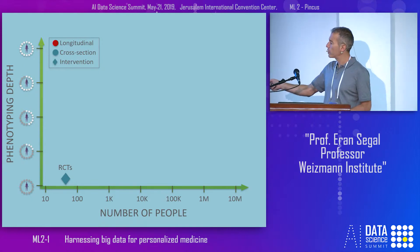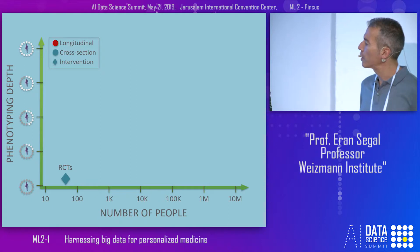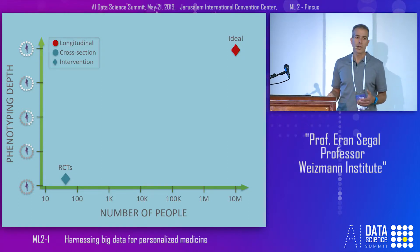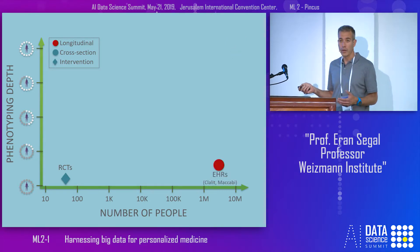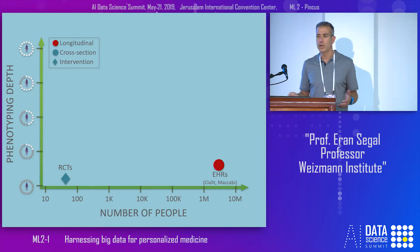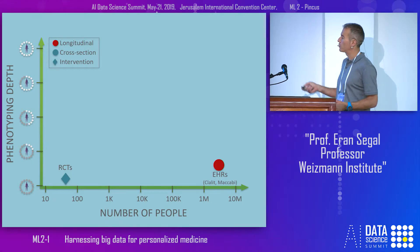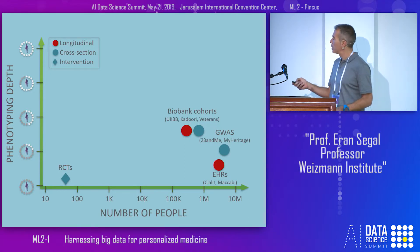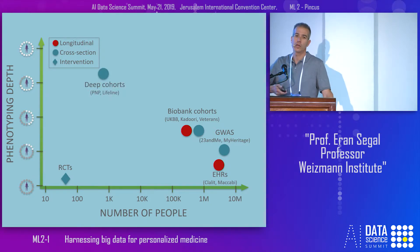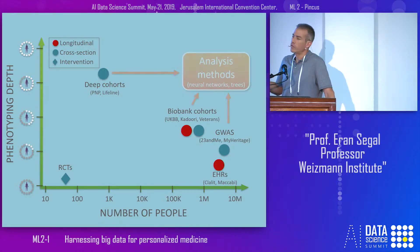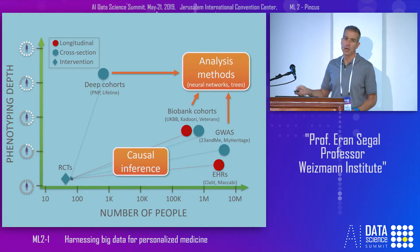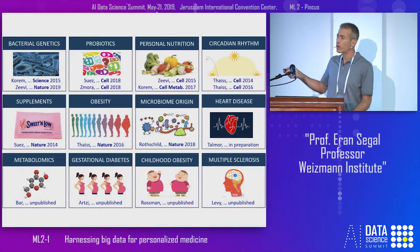Until recently, we mostly had randomized clinical trials on dozens of patients that didn't measure a lot of different information. Although the ideal dataset measuring everything on millions of people is probably not realistic, in recent years there are exciting datasets like electronic health records becoming available that measure traditional markers like blood tests and diagnosis, even up to millions of people — plus genetics, and cohorts of hundreds of thousands measuring various molecular markers. There are also advances in analysis methods for making sense of this data and in methods that infer causality from observational data that will eventually lead to randomized clinical trials. We work across this entire space.